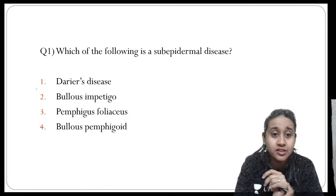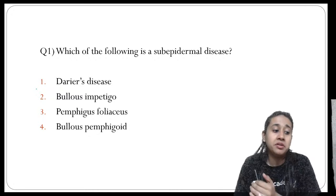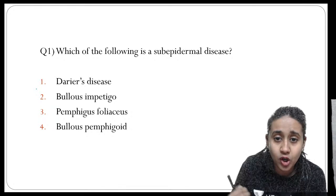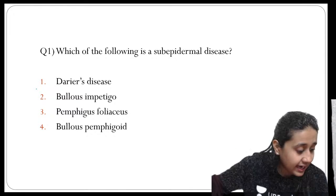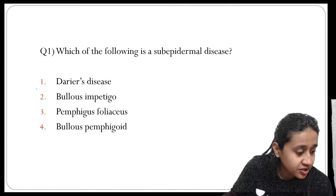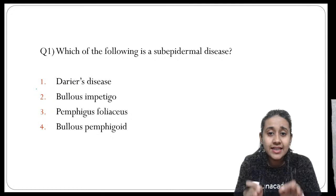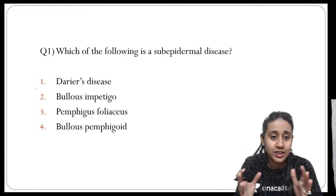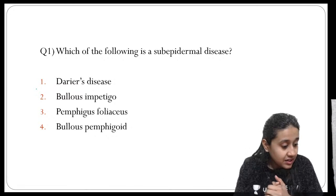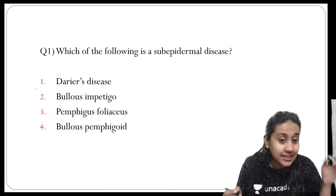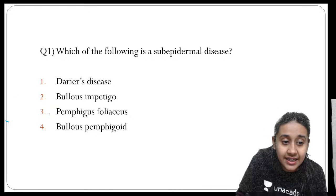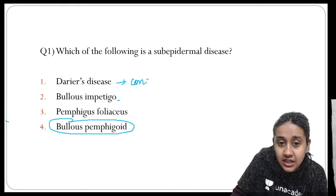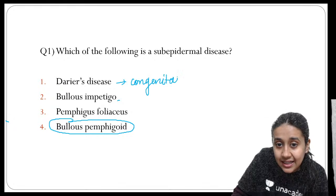Next question: which of the following is a subepidermal disease? The options are Darier's disease, bullous impetigo, pemphigus vulgaris, or bullous pemphigoid. The correct answer here is bullous pemphigoid. Darier's disease is an example of a congenital acantholytic disorder.